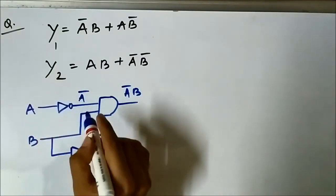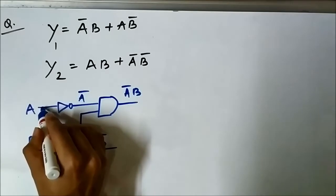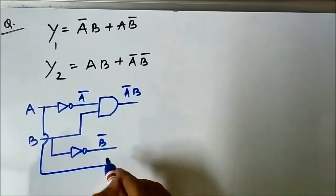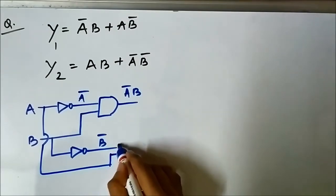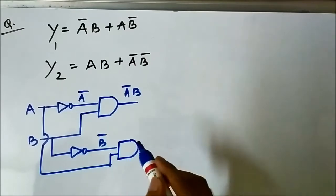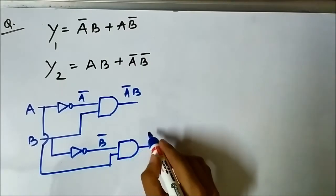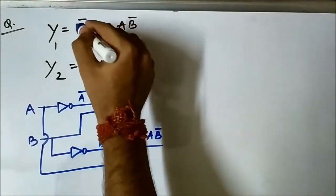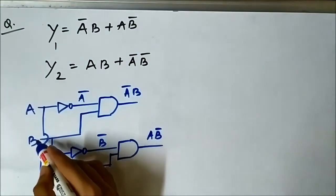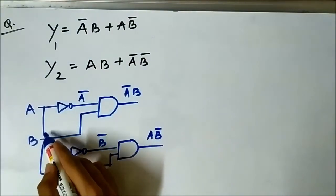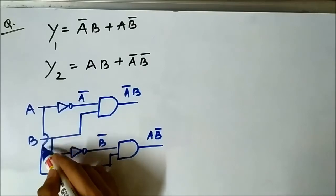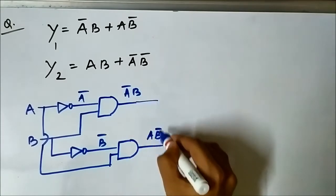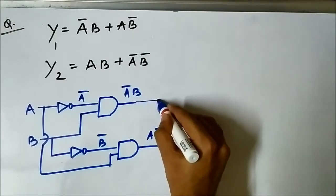Then we AND b̄ with a, so we take the signal from a and feed it into a two-input AND gate to get a·b̄. We now have the individual terms ā·b and a·b̄. Note that where wires cross here, they are not shorted — they are overlapping. Now we give both terms to a two-input OR gate.